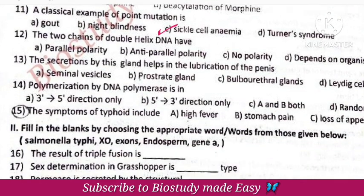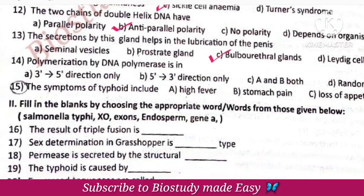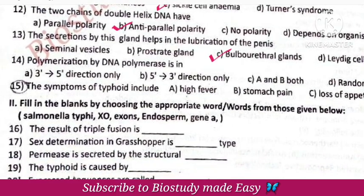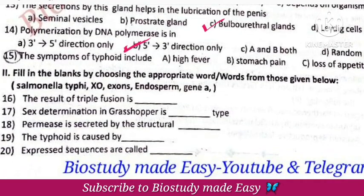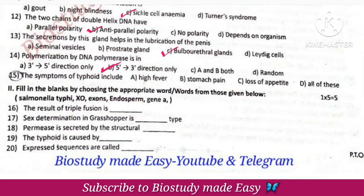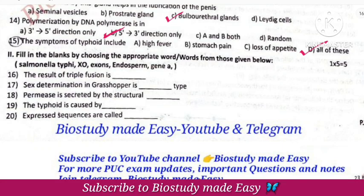Eleventh one answer: option C, sickle cell anemia. Twelfth one: option B, antiparallel polarity. Thirteenth answer is option C, bulbo-urethral glands. Fourteenth answer: 5' to 3' direction, that is option B. Fifteenth one answer: all of these.